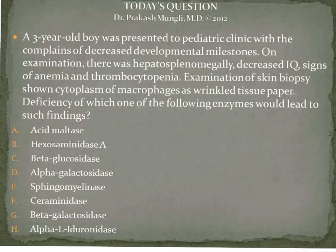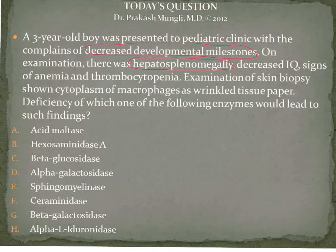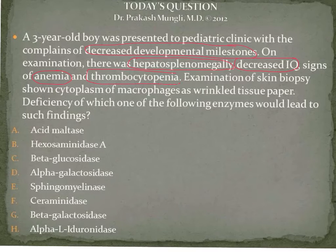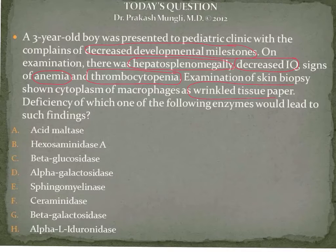Some highlights of this case: a 3-year-old boy with decreased developmental milestones. The patient has hepatosplenomegaly and decreased IQ, indicating mental retardation. There is anemia — decrease in red blood cells — and thrombocytopenia, indicating decrease in platelets. Skin biopsy isolates macrophages whose cytoplasm shows a typical wrinkled tissue paper appearance.